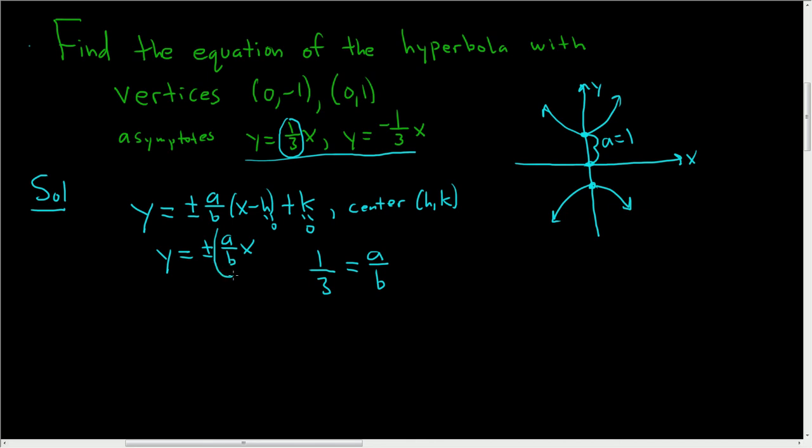Right, because that's the slope here, a over b. Now a is 1, so we get 1 third equals 1 over b. We can cross multiply, and we end up with b equals 3.